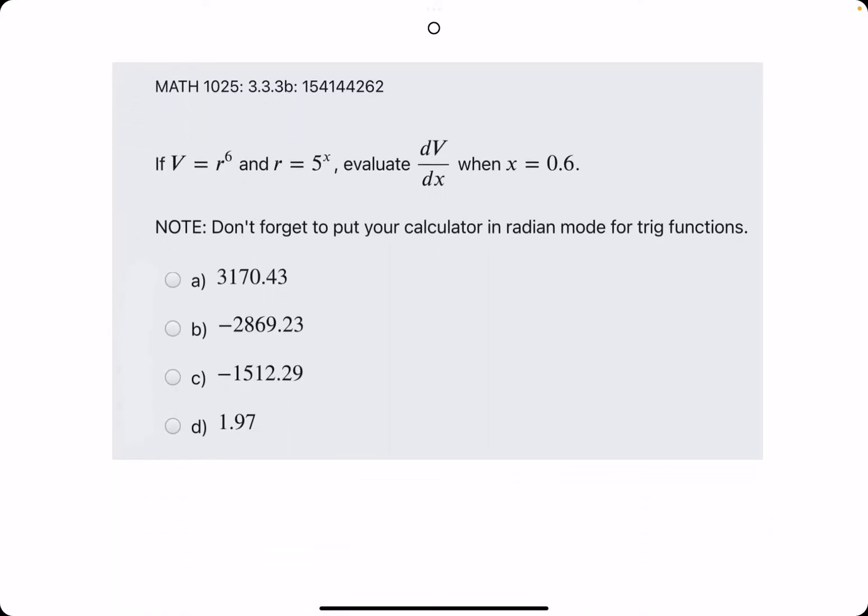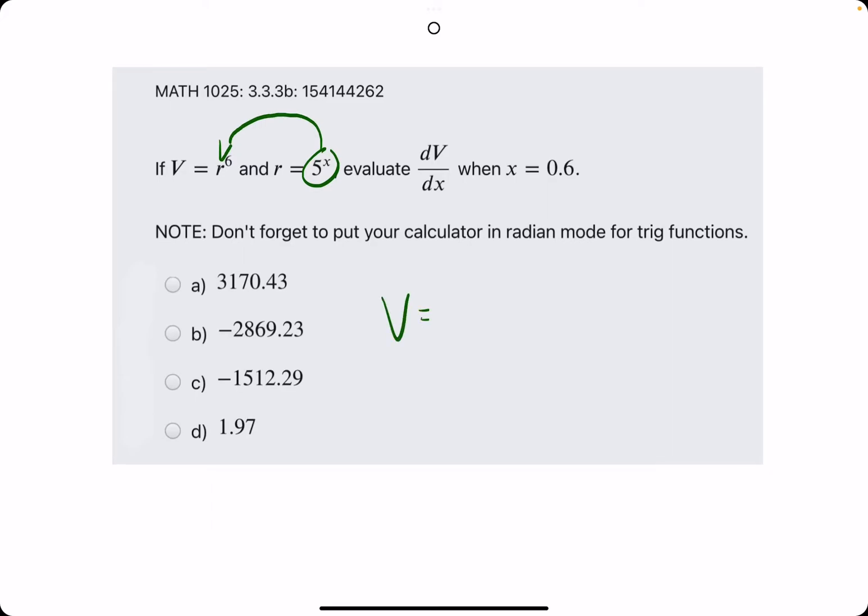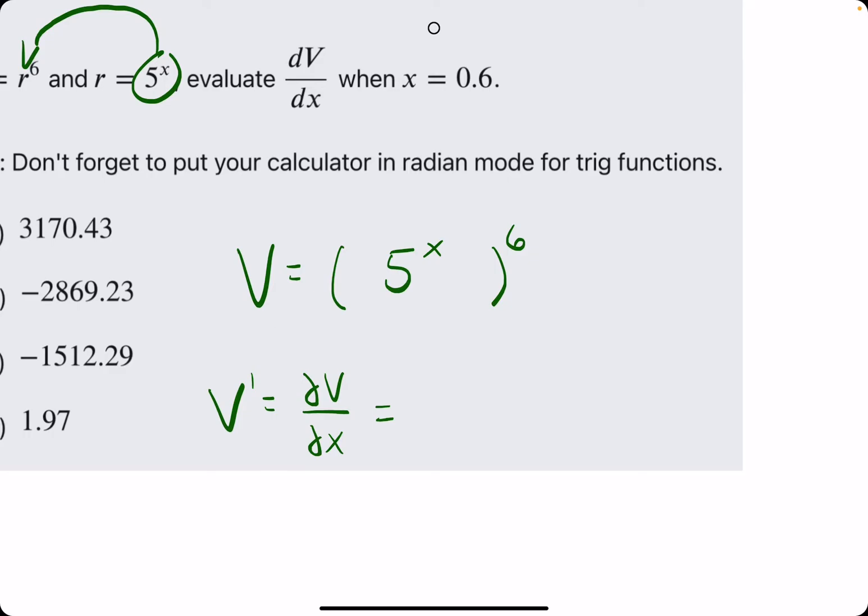Let's go and do two more examples. This function is being plugged into the r there. So, we have the function v can be rewritten as 5 to the x raised to the sixth. When taking the derivative, we are naturally finding v prime or dv over dx, and then we'll plug in the 0.6.